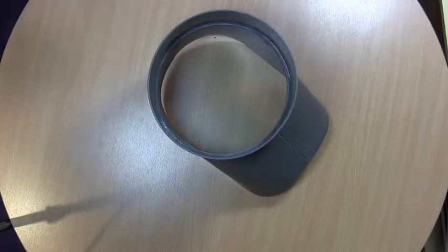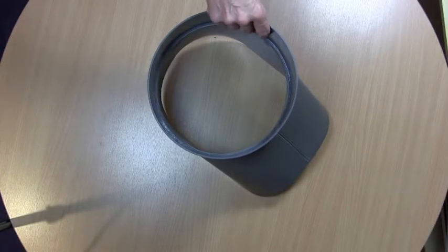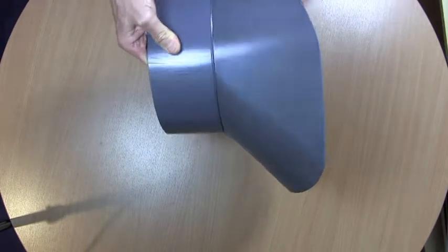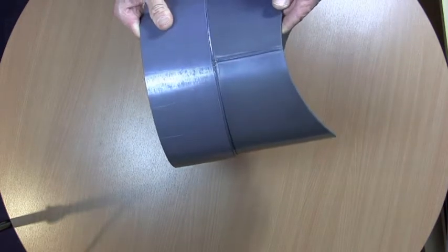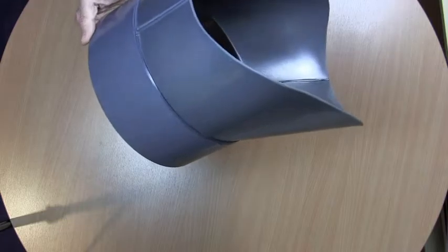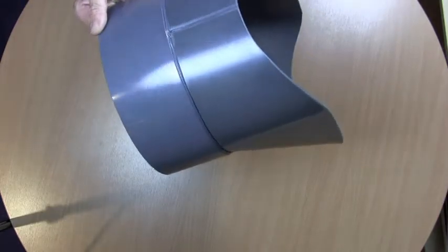Ok, what we've got here is a ventilation boot or saddle fitting. This is designed to give you a branch off of a larger diameter pipe.